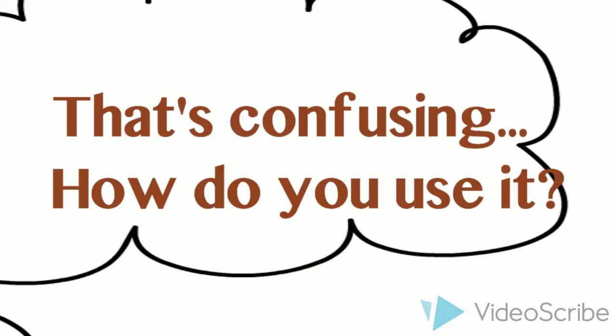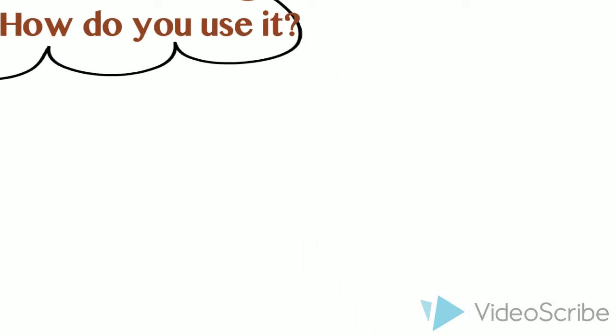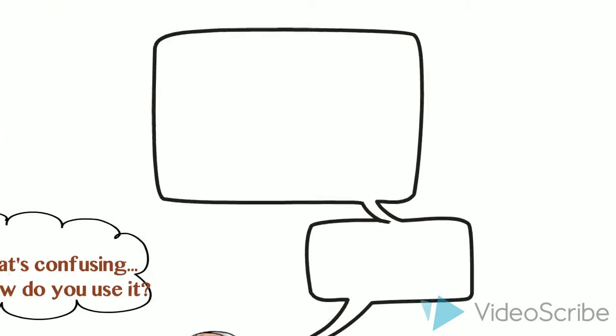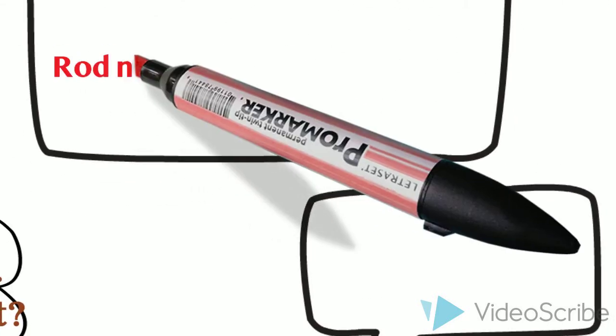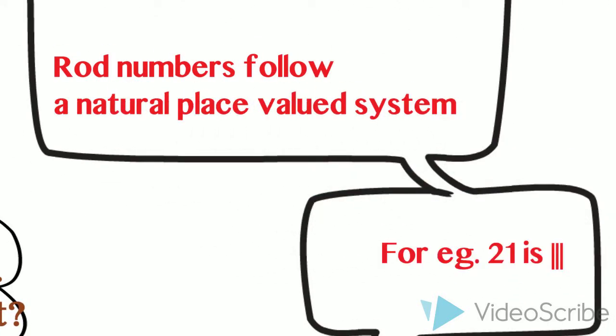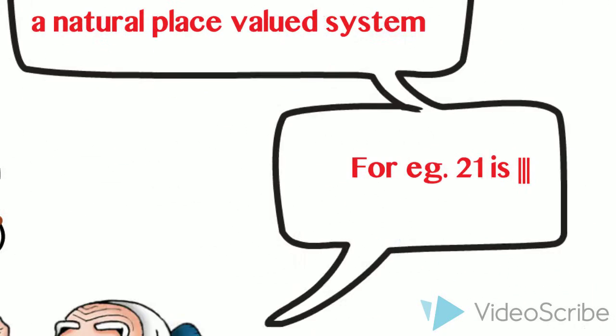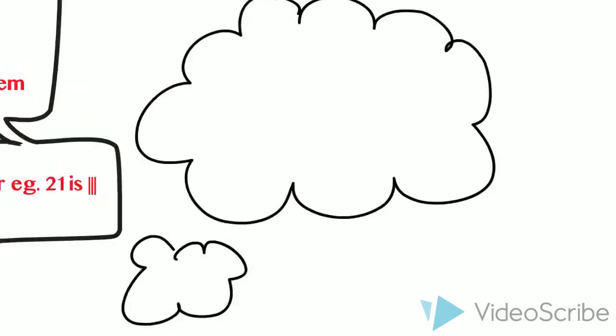How do we use this system? The most significant property of the rod number system was its natural place value. The rightmost column represented units and the one to its left represented tens and so on. Zeroes were represented by blanks, hence there was no use of a symbol for zero.